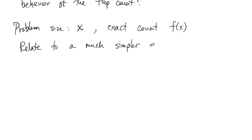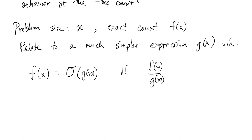The idea is that since this isn't a real precise measurement anyway, we want to relate it to a much simpler thing, g. And there are two major ways of doing this. One is to write that f is O(g). What that means is that the ratio of f to g is bounded above as x goes to infinity. So f grows no faster than g.